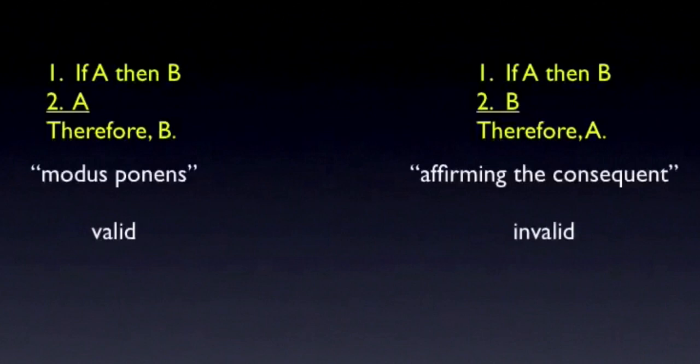On the left is modus ponens, which is valid. On the right is the invalid form that you get when you try to infer the antecedent by affirming the consequent. No matter what claims you substitute for A and B, any argument that has the form of modus ponens will be valid, and any argument that affirms the consequent will be invalid.